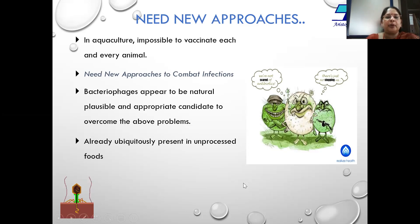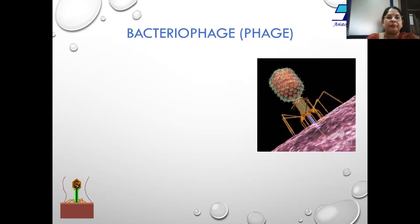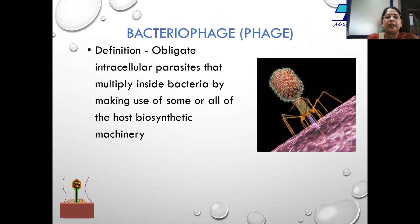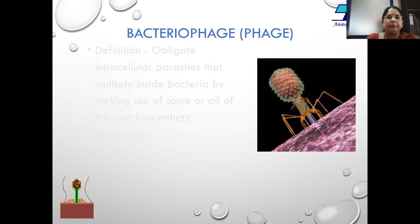Bacteriophages are already present in unprocessed food and in nature. What is a bacteriophage? A bacteriophage is an obligate intracellular parasite that multiplies inside a bacterium by using the bacterial machinery.